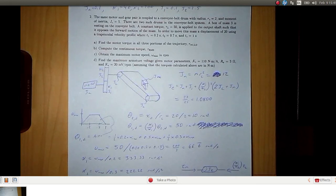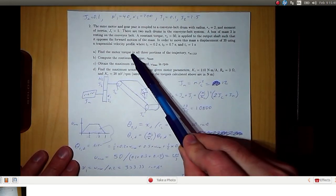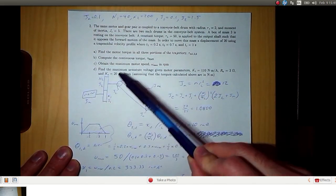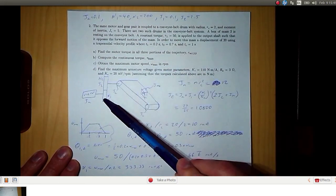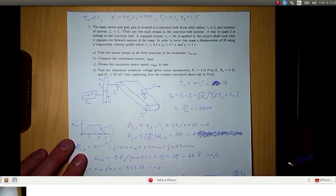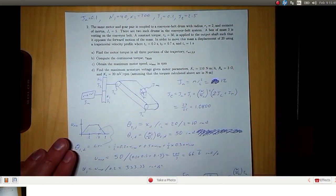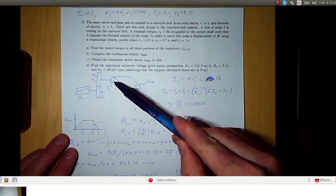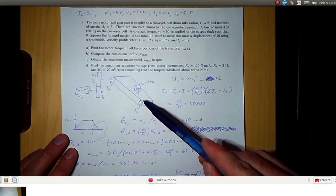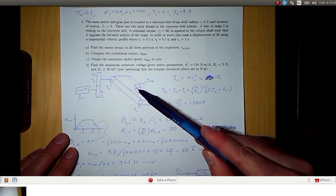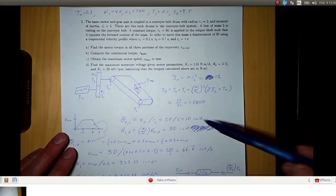Here we have a motor and gearing problem with incremental motion. We're given that the motor armature moment of inertia is 0.1, the number of teeth on gear 1 is 40, the number of teeth on gear 2 is 200. These gears have moments of inertia 0.1 and 2.5 respectively, and we have a mass on a conveyor belt. The drums for the conveyor belt have a moment of inertia of 5 each, their radii is 2, and we have a box of mass 3 resting on the conveyor belt.